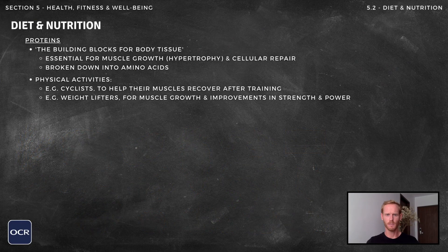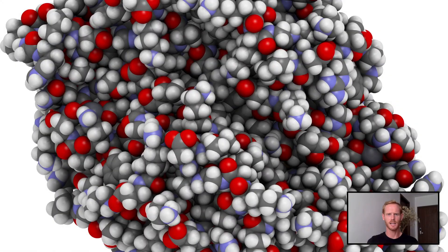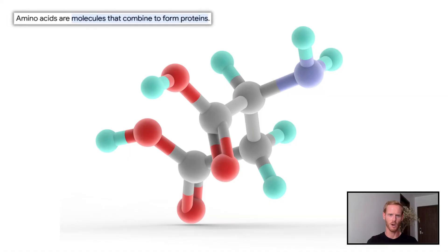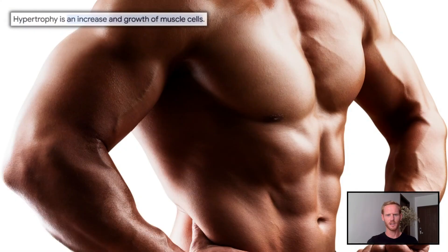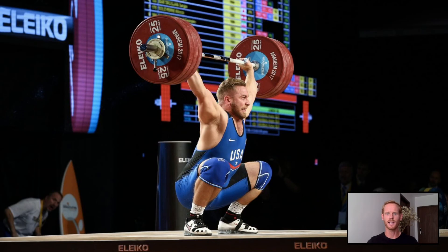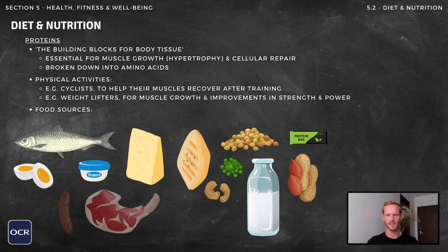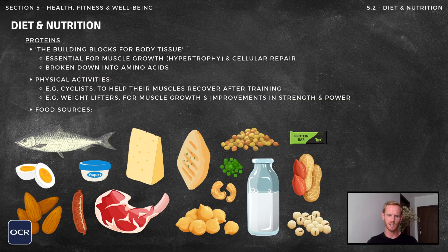Proteins are known as the building blocks for body tissue and are essential for growth and repair. They typically make up around 15% of our dietary intake and are broken down into smaller molecules called amino acids. These amino acids are used to repair damaged muscle cells, meaning protein is particularly important for recovery after an intense training session or competition. Protein consumption also aids hypertrophy or muscle growth and is therefore a priority for athletes like sprinters, rugby players and weightlifters who rely on attributes like power, speed and strength. Protein sources include meat, dairy products, beans, eggs, fish and nuts.